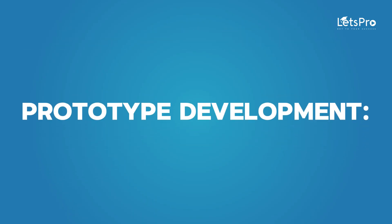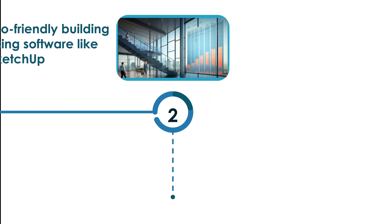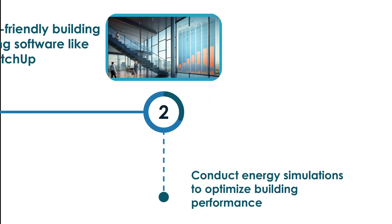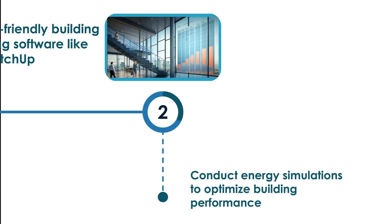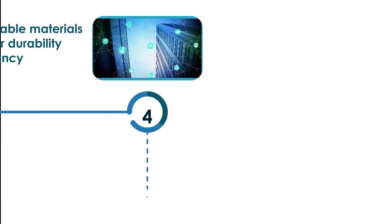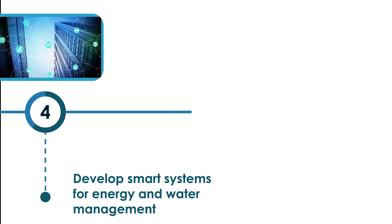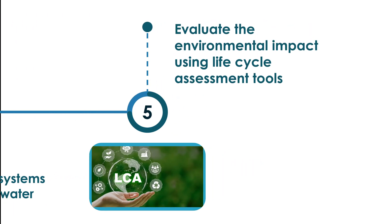For prototype development, design eco-friendly building models using software like Revit or SketchUp. Conduct energy simulations to optimize building performance. Use renewable materials and test for durability and efficiency. Develop smart systems for energy and water management, and evaluate the environmental impact using life cycle assessment tools.